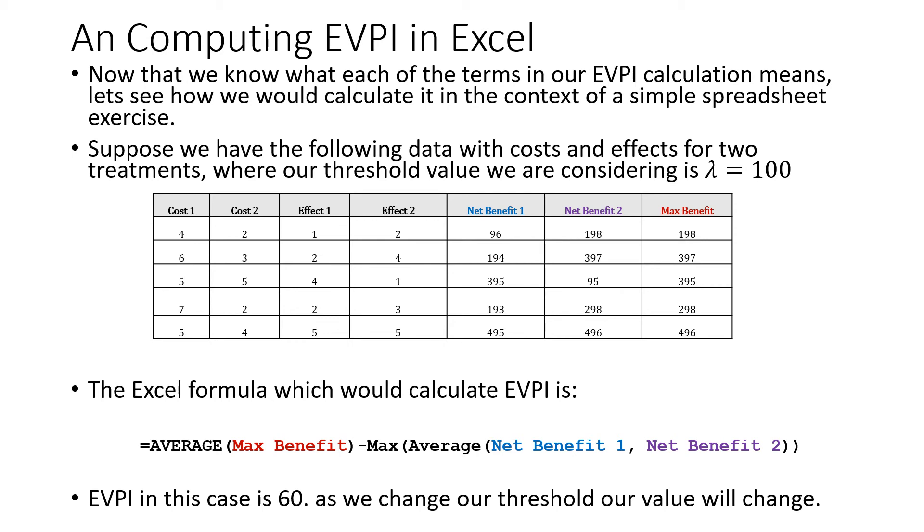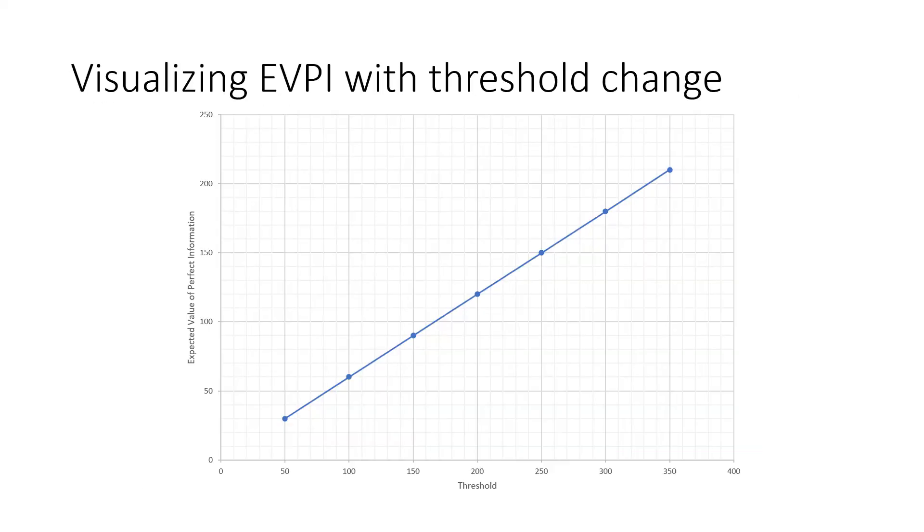As we change our thresholds, our threshold values will change. We can actually produce a visual, and that visual is like this one here, where we have on our vertical axis the expected value of perfect information, and our threshold value on the side. We could see some pictures where we have kinks in these curves, and we're going to explain what it means to have these kinks and sudden cutoffs in these curves.